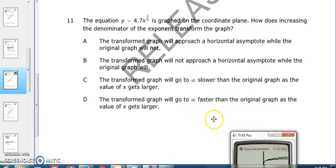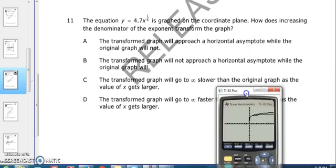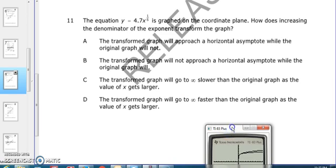Well, the original graph was to the 1/6th, and that is the one to the higher horizontal asymptote. So the transformed graph, which is the second one we did, will go to infinity slower than the original graph as the value of x gets larger.